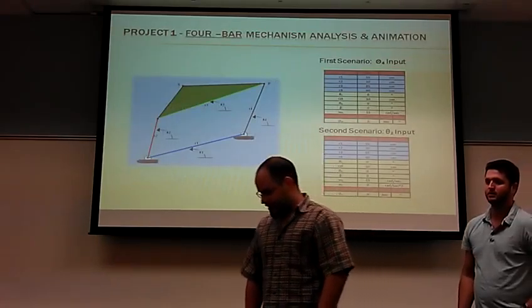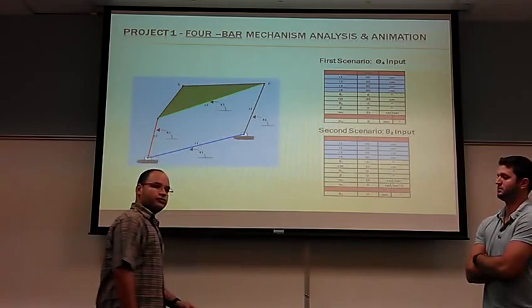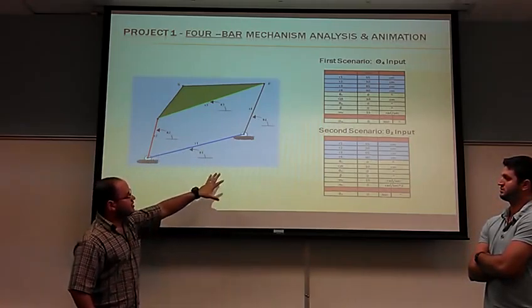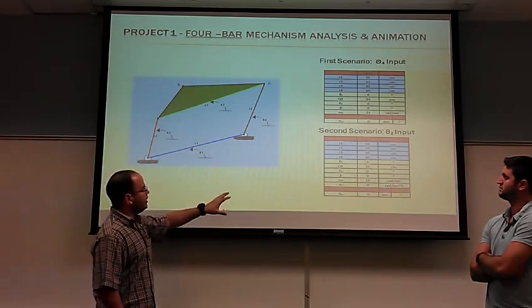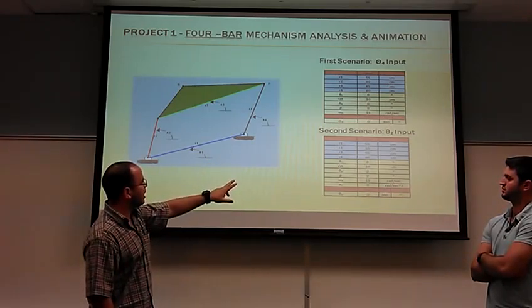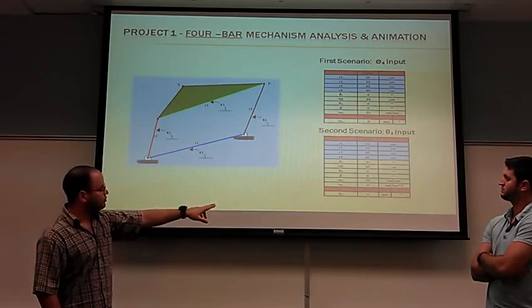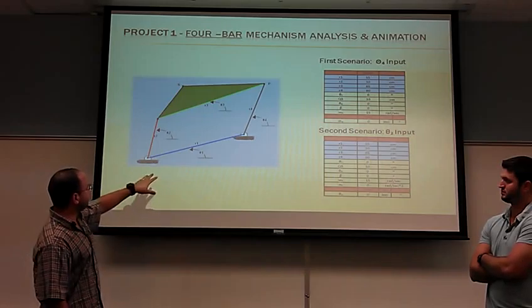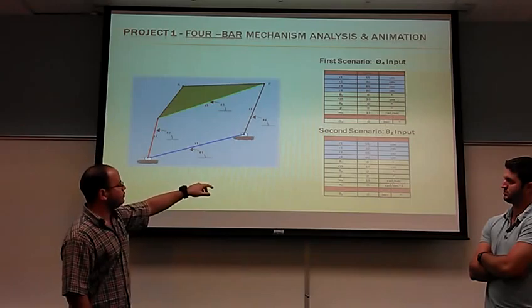Our first project is related to a four-bar mechanism. We have two tables in which we have the same input and data. The only difference between them is that in the first scenario, we're using theta-4 as an input, and in the second table, we're using theta-2 as an input. As you can see in the graph, we have all the lengths and all the angles.